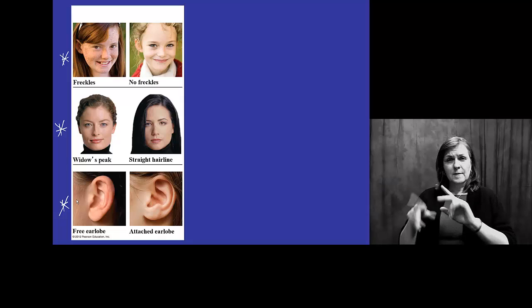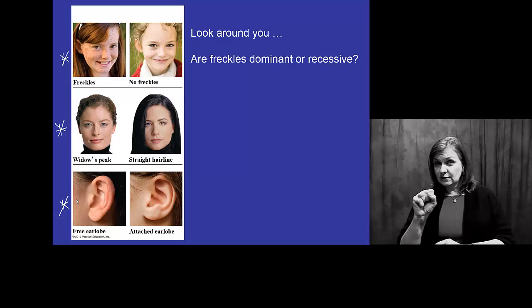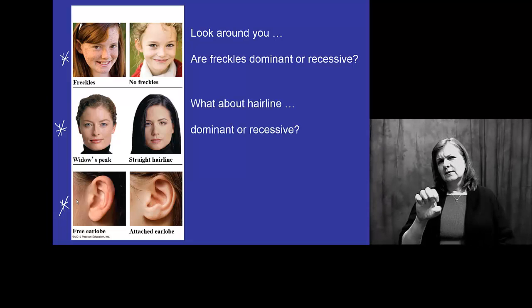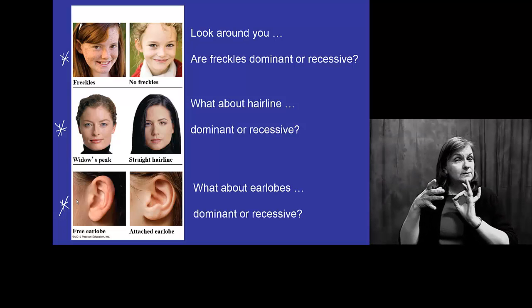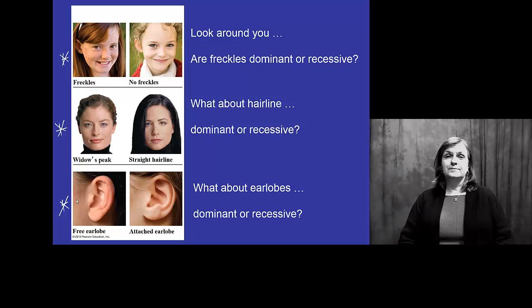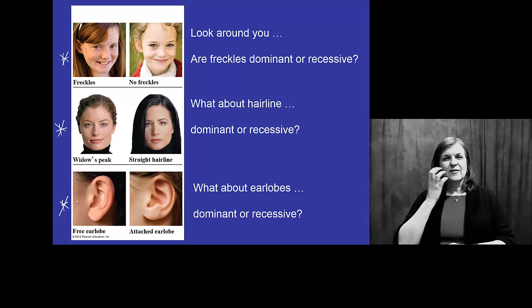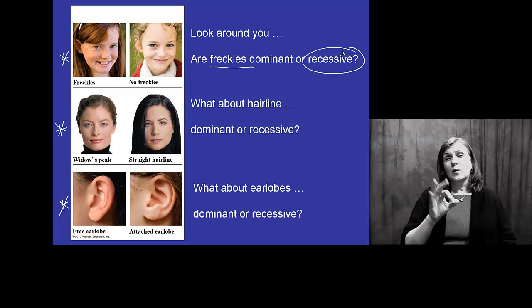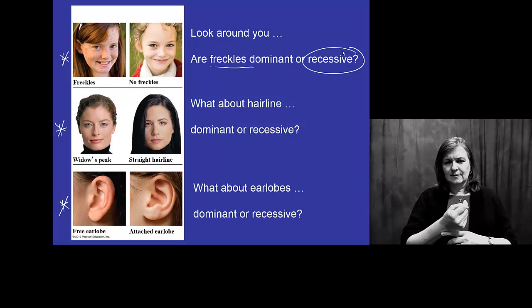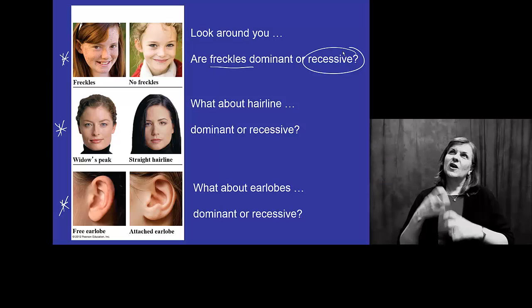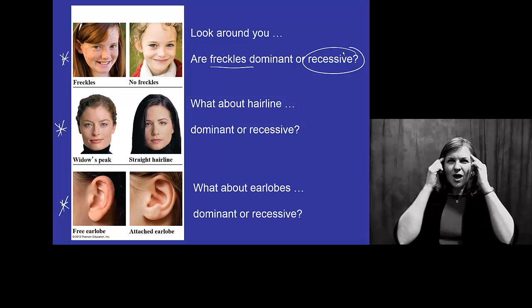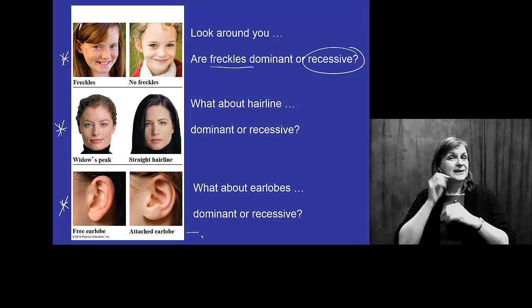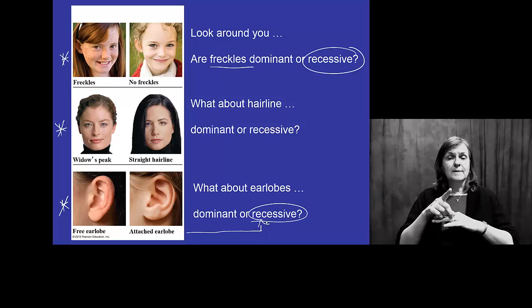Okay. Of those people you know, are freckles, do you think, dominant or recessive? What about hairline? Dominant? Recessive? Ear lobes? Dominant? Recessive? Which one is which? For most of you, you've probably said that freckles are recessive. Having freckles is rare. So, the freckle gene must be recessive if we don't see it very often. What about hairline? Well, this may be harder for you to think about. We don't see everyone's hairline all the time. What about ear lobes? The attached ear lobe you might think of is actually being recessive. Most of the ear lobes that we see are dominant.